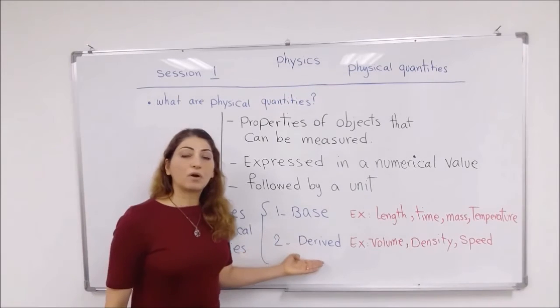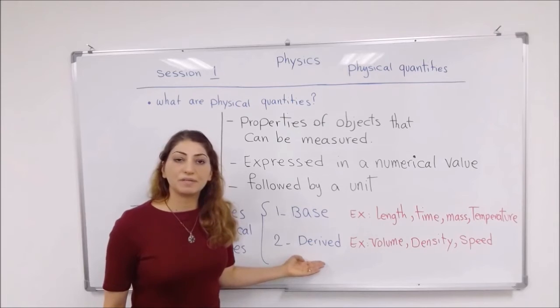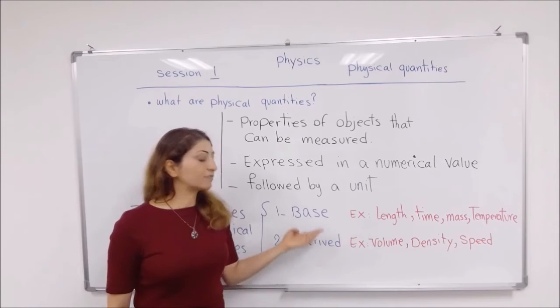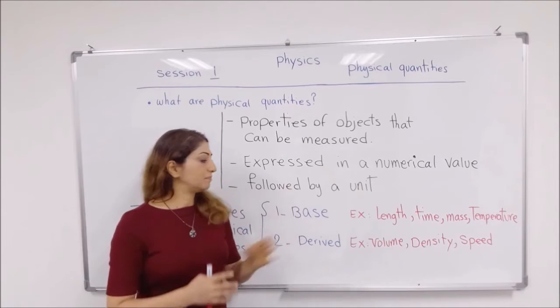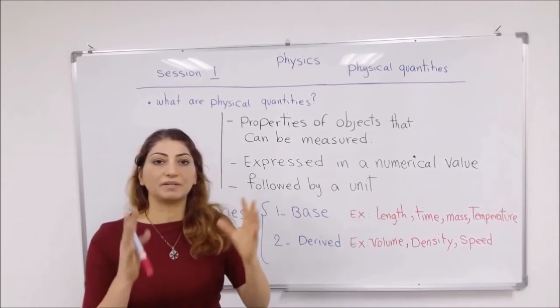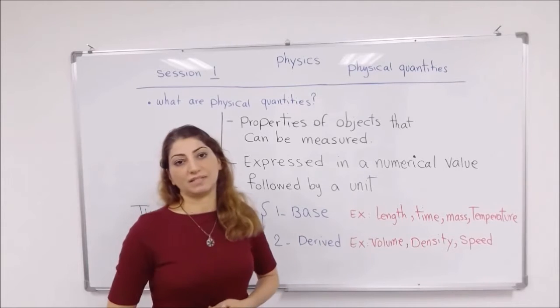Why are they called derived quantities? Because they are usually derived from the base quantities. More than one base quantity is combined together to make a derived quantity.